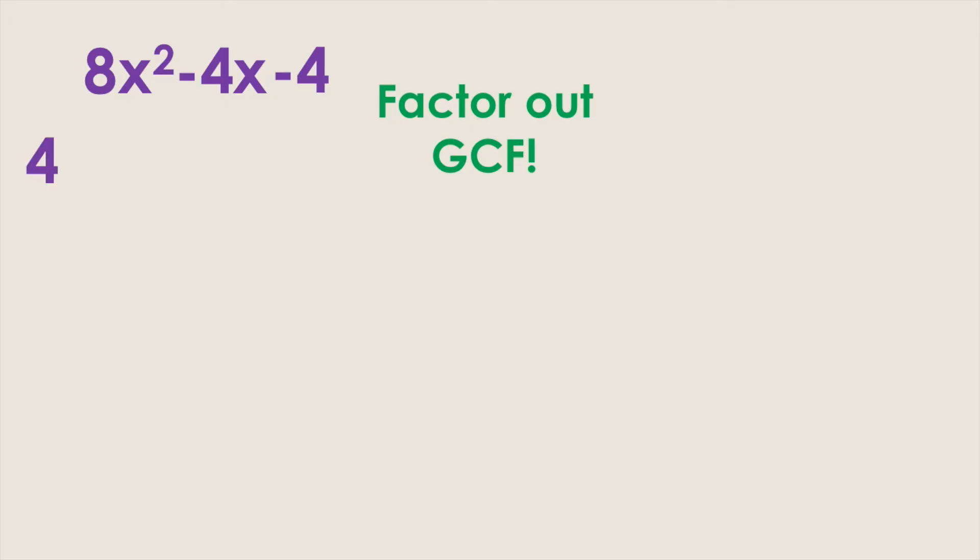If we divide out a 4 from every term then we're left with 2x squared minus 1x minus 1. Now that our polynomial inside the parentheses has no more greatest common factors we can slide and divide inside the parentheses.